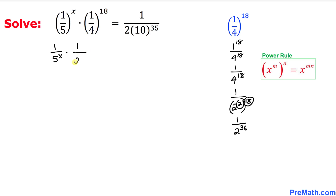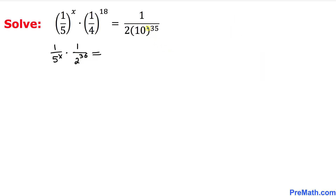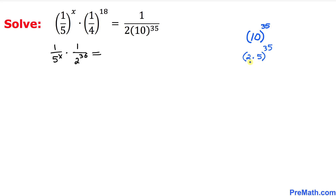So the second part simplifies to 1 over 2 power 36. Now on the right hand side, let's focus on 10 power 35 in the denominator. Inside the parentheses, 10 can be written as 2 times 5, and then raised to the power 35. This gives us 2 power 35 times 5 power 35.